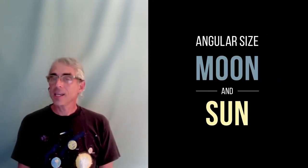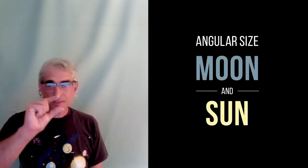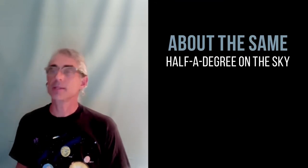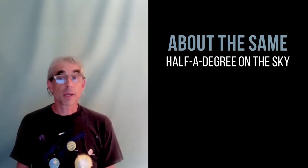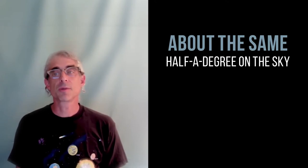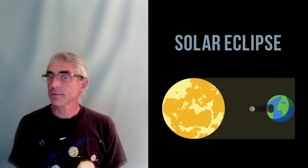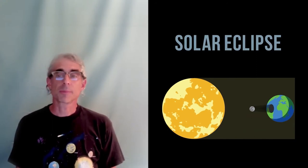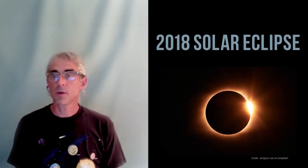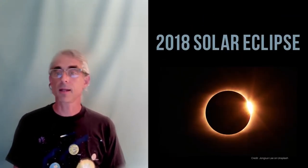Turns out that the angular size of the moon and the Sun are about the same, about half a degree on the sky. Because of this, there are special times in the lunar orbit where the moon passes exactly in front of the Sun, causing a solar eclipse, just like the one three years ago that you might have seen if you'd traveled to the mainland that August.